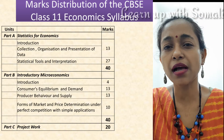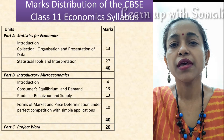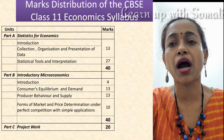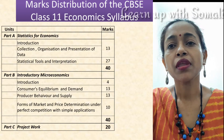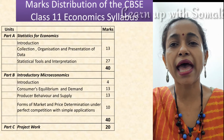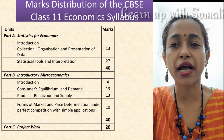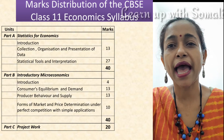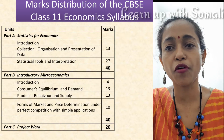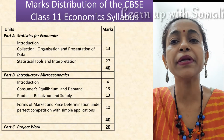Now let us come to Part B — Introductory Microeconomics. The Introduction chapter carries 4 marks, Consumer Equilibrium and Demand carries 13 marks, Producer Behavior and Supply also carries 13 marks, and at the concluding part of Introductory Microeconomics we have Forms of Market and Price Determination under perfect competition with simple applications.